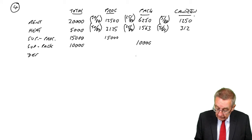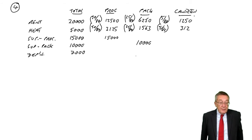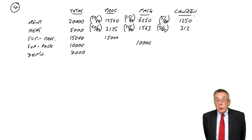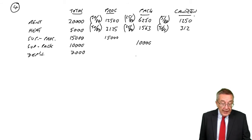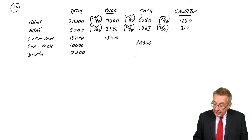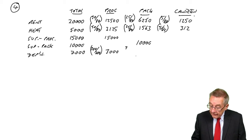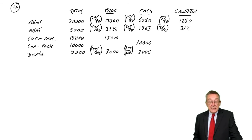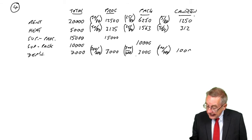Depreciation totals 7,000. Looking at the information available, the value of the equipment is the sensible apportionment basis. There is a total of 700,000 worth of equipment — 300,000 in processing, 300,000 in packing, and 100,000 in canteen. So processing gets 300/700ths, which is 3,000; packing gets 300/700ths, which is 3,000; and canteen gets 100/700ths, which is 1,000.